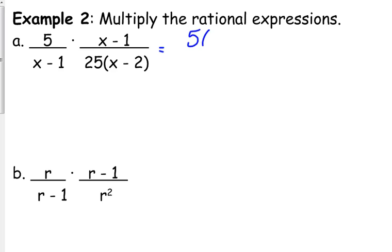So this is going to be 5 times x minus 1. I'm going to leave it in factored form because we're going to end up simplifying. Now, I am going to rearrange the denominator. I'm going to put that 25 in front because constants go in front of linear factors. The order of multiplication doesn't matter.